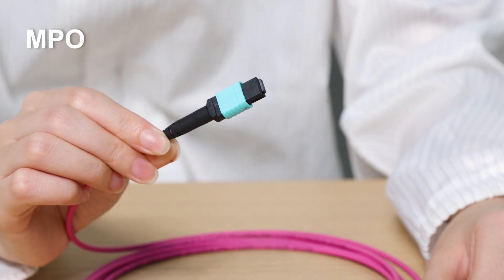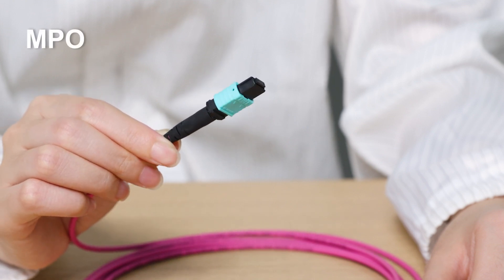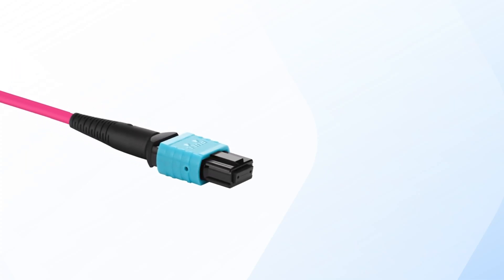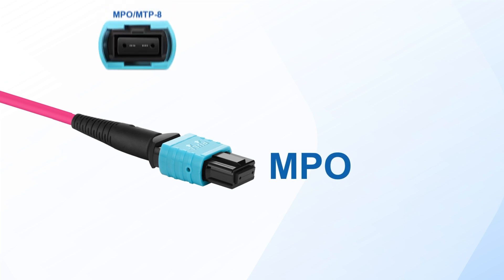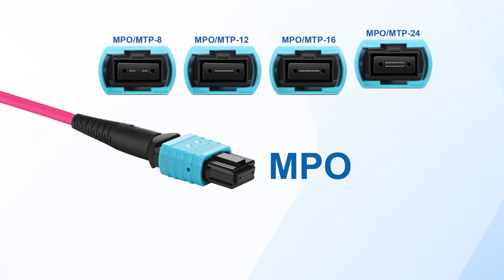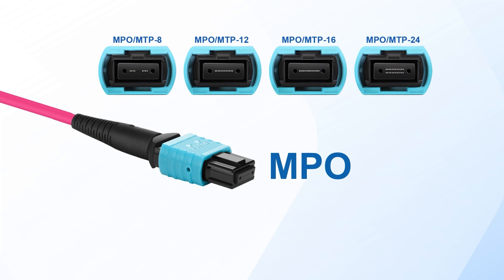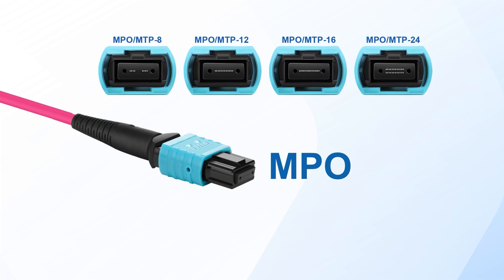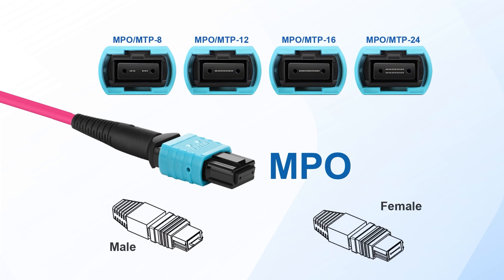We'll explain their distinctions to help you understand the differences between them. Back in the 1980s, Japan's NTT Corporation developed the MPO connector, used in common data center and LAN applications, supporting 8, 12, 16, or 24 fibers. These connectors come in male and female types. The difference lies in the pins — male MPO ferrules have two alignment pins, while female ones have corresponding holes.